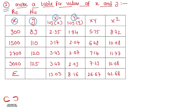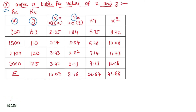So X = log(Re) and Y = log(Nu). Calculate X = log of the Re values, and Y = log of the Nu values: log(89), log(110), log(120), log(125). The summation of capital X = 13.03, summation of capital Y = 8.16, summation of capital XY = 26.67, and summation of capital X² = 42.68.